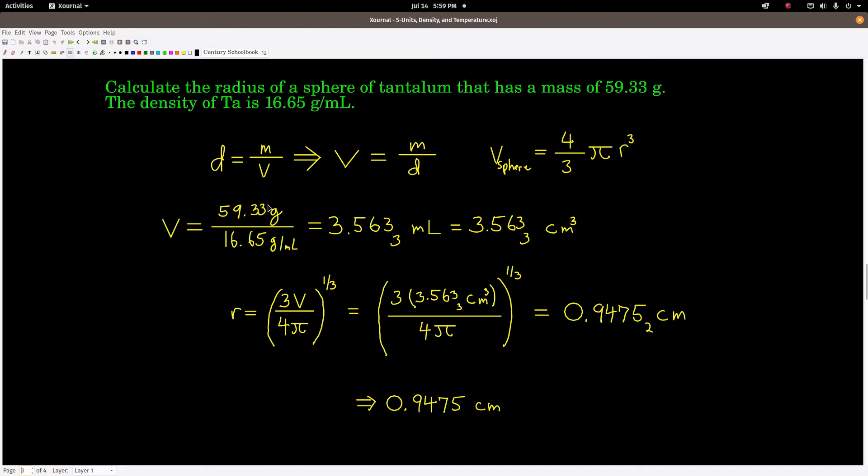The way we get the volume is because we're given the density and the mass, we can rearrange the density formula, solve for volume, and then plug in the mass and the density. That will give us the volume, then solve this for radius. The volume is the mass over the density. Notice how the units of grams cancel and we end up with milliliters. But remember, a milliliter is exactly the same as a centimeter cubed.